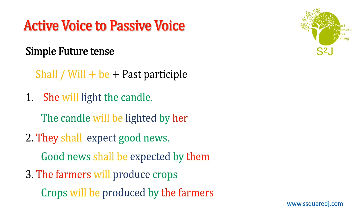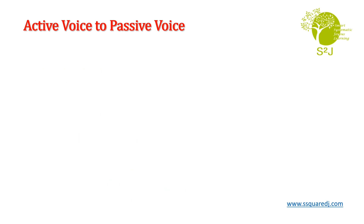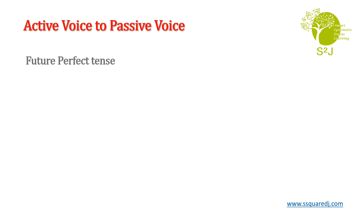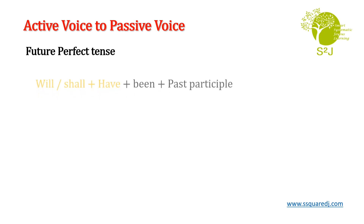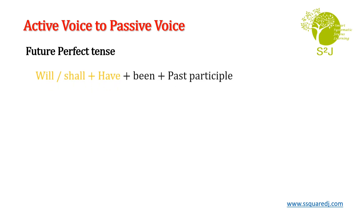Now let us go to the next tense — that is, future perfect tense. Sentences with future perfect tense will be changed according to the given syntax: will or shall + have + been + past participle.